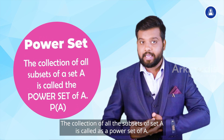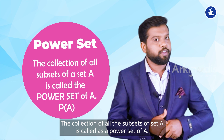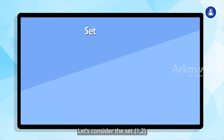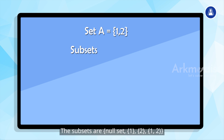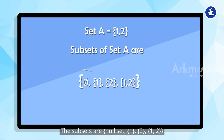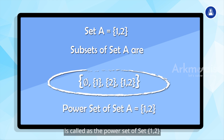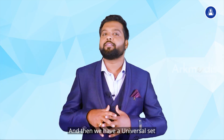Now, what is a power set? The collection of all the subsets of set A is called the power set of A, denoted by P(A). For example, consider the set {1, 2}. The subsets are: null set, {1}, {2}, and {1, 2}. This collection of all the subsets of {1, 2} is called the power set of {1, 2}.